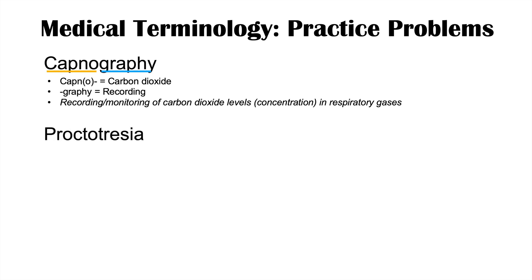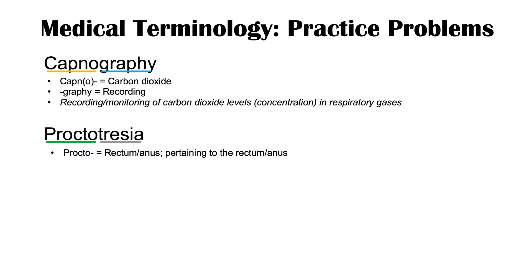The next word is proctotresia. Procto refers to the rectum or anus, or both. Tresia means a perforation or opening, and can refer to a surgical opening as well. So proctotresia is a perforation or opening of the rectum and/or anus — it's usually a surgical procedure for an imperforate anus in babies, creating a perforation or opening where there was none.